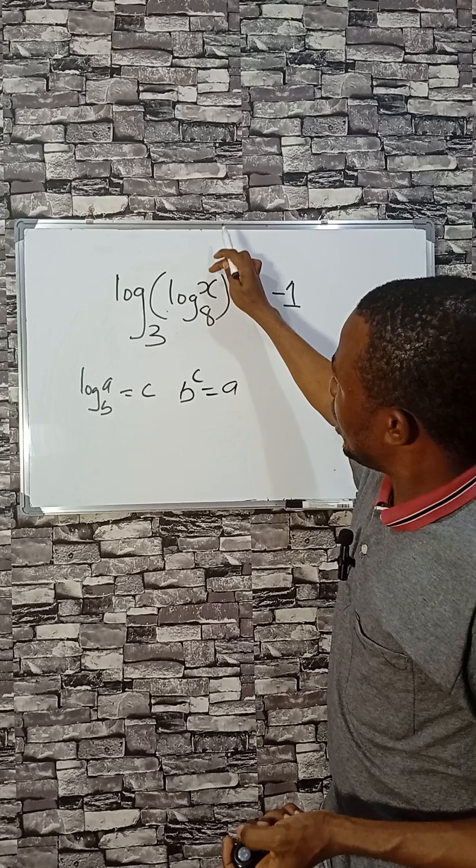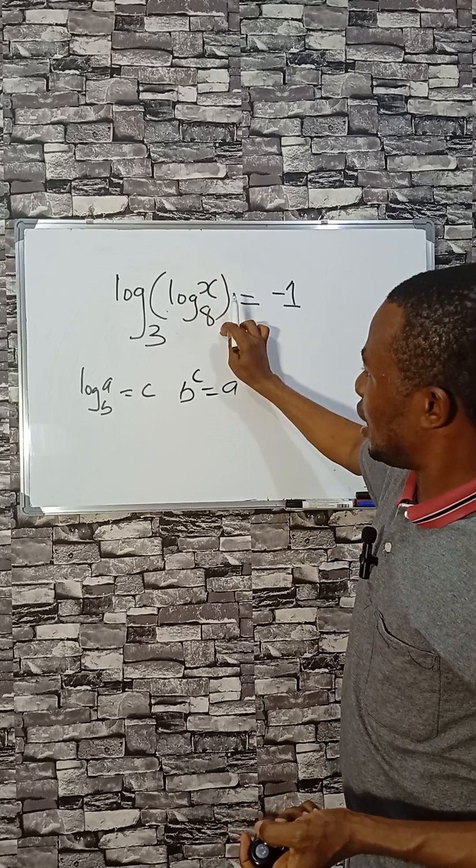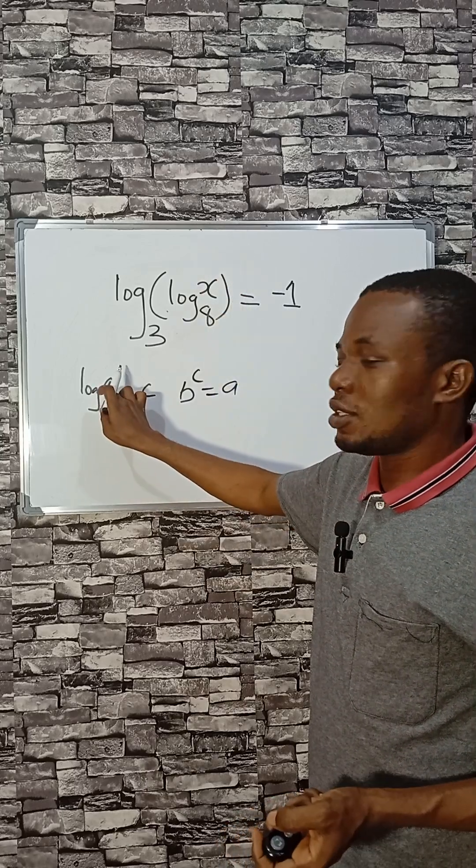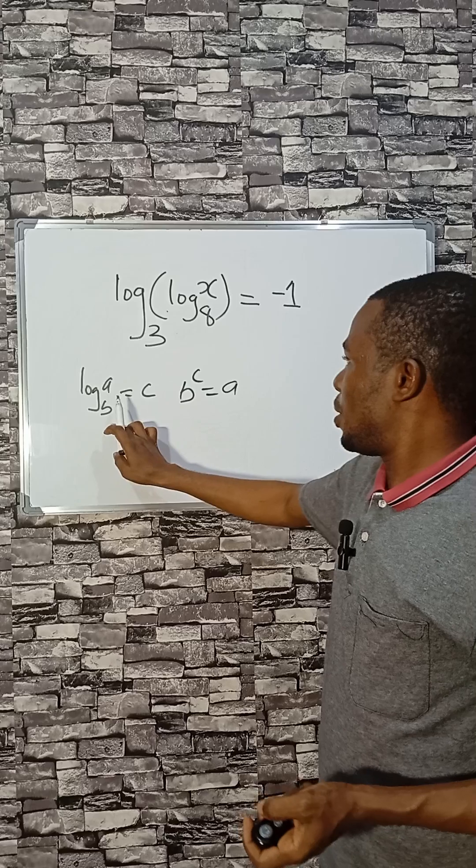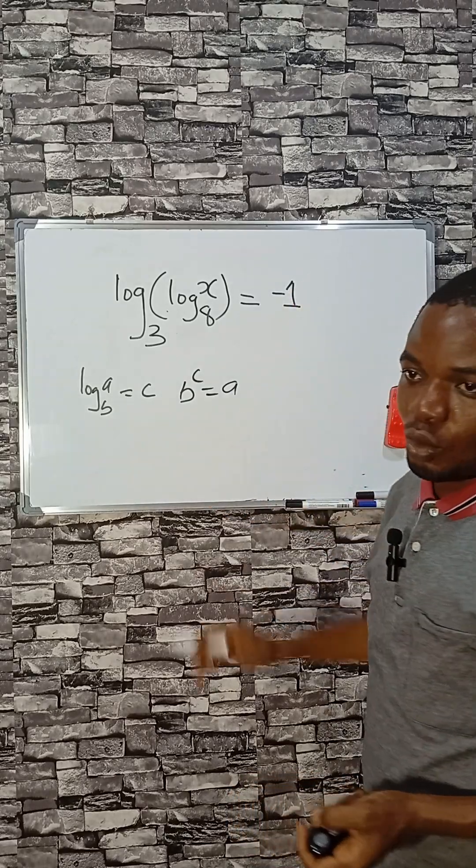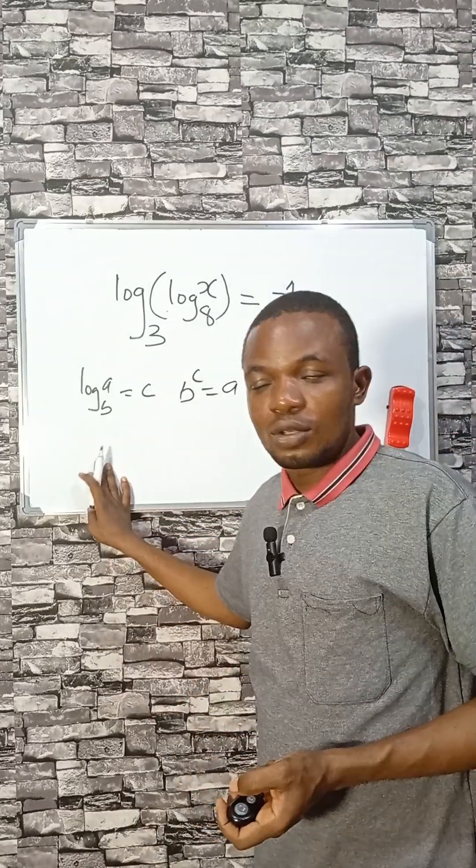So log X base 8 is likened to A that is here. Then 3 is the base and C is the minus 1 here. With this understanding we can solve it.